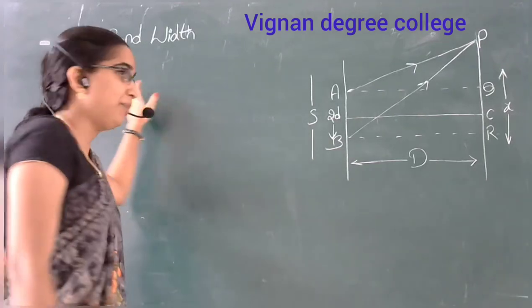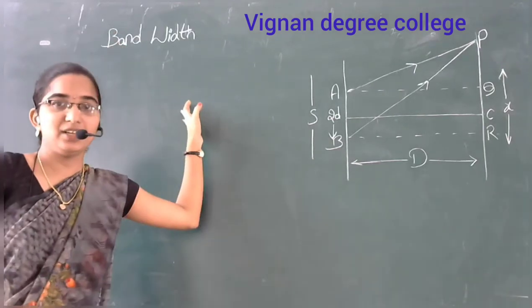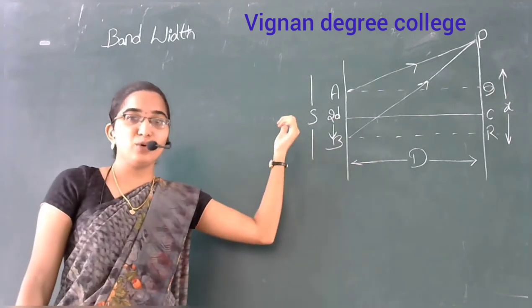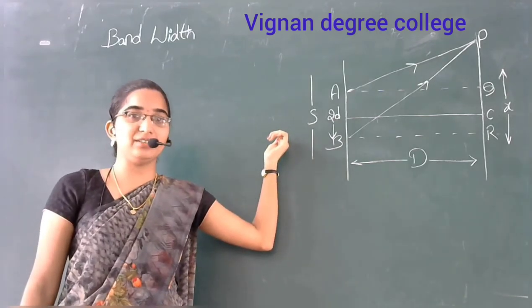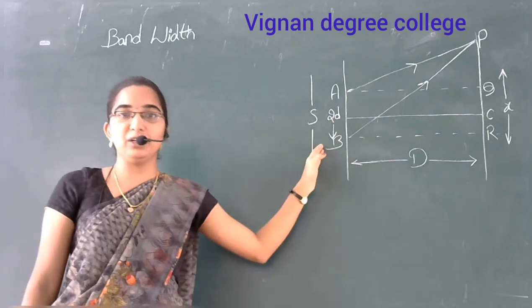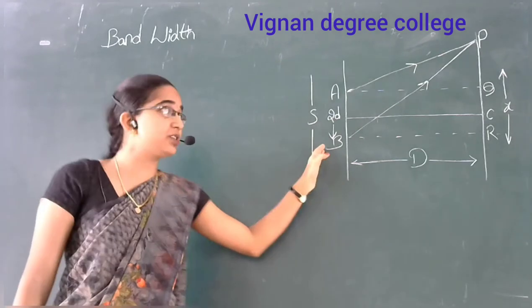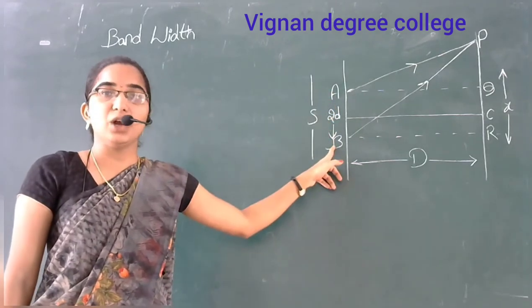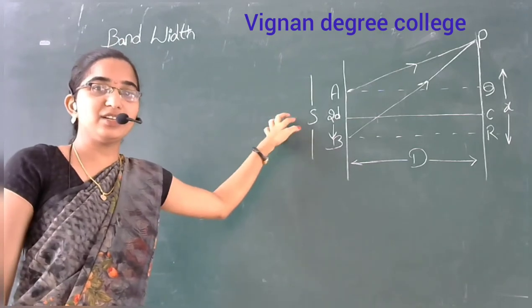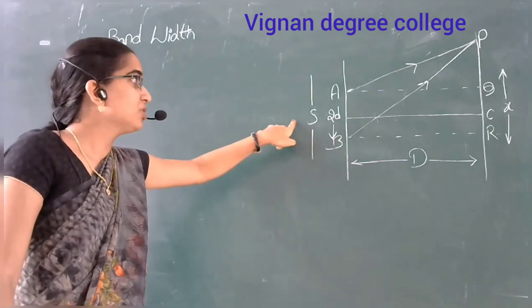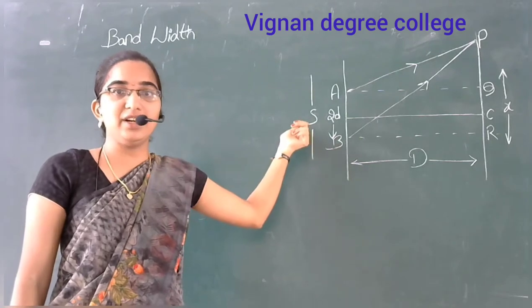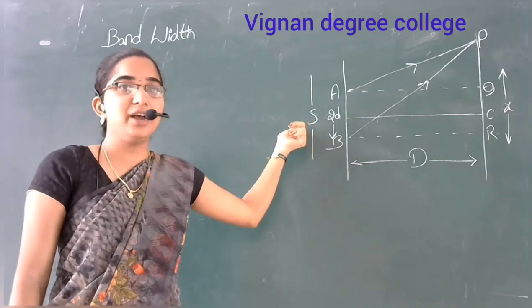Next topic is band width. S is a monochromatic source of light. A and B are two pinholes, equidistant from S.